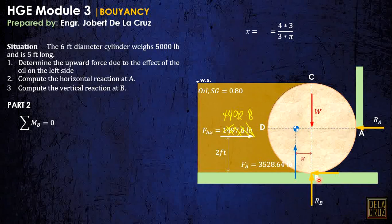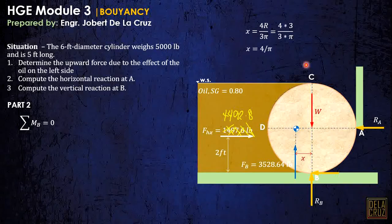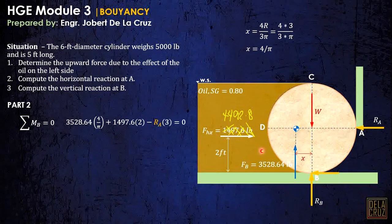The centroid of the displaced half-cylinder volume is located at X = 4R/(3π) from the axis. By taking the summation of moments about B: buoyant force times X plus FHX times 2, minus RA times 3 (which is the radius, half the diameter) equals zero. The weight does not create a moment about point B.